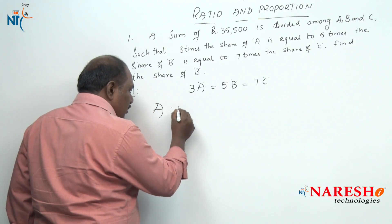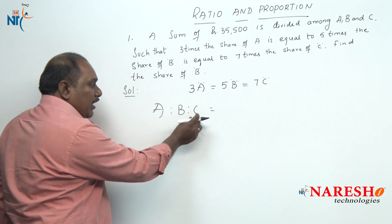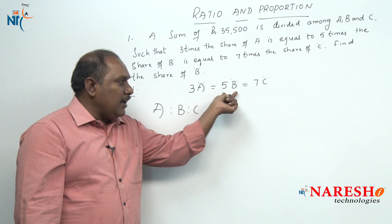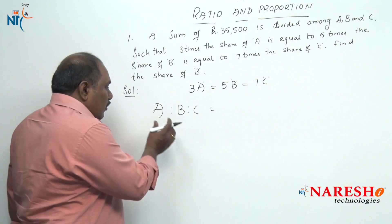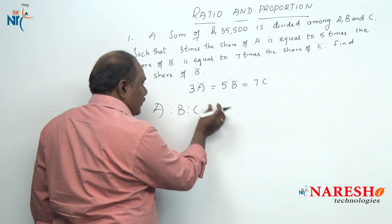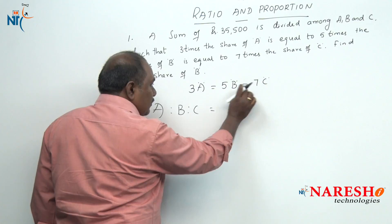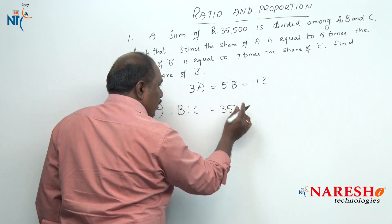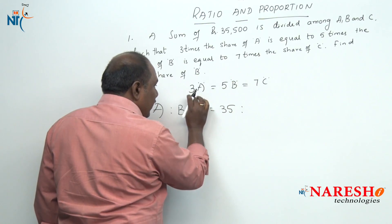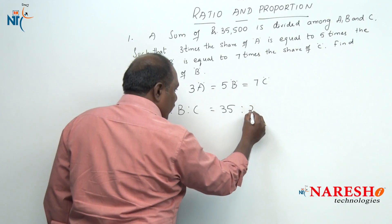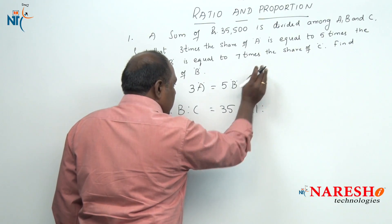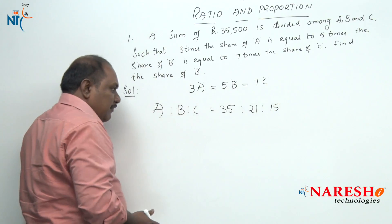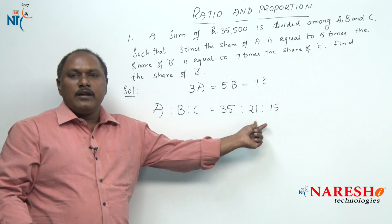Directly, if I want to find in what ratio the money is divided among A, B and C — when we have 3A equals 5B equals 7C — if you want A, close A and multiply the other two numbers: 5 into 7 is 35. If you want B, close B and multiply the other two numbers: 3 into 7 is 21. And if you want C, close C and multiply the other two numbers: 3 into 5 is 15. So you can clearly see we got the same ratio: 35 is to 21 is to 15.